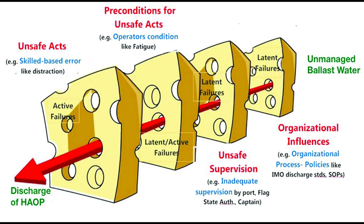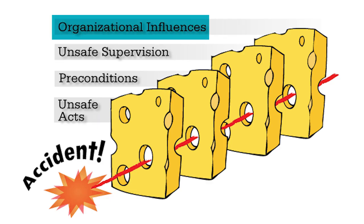Let's break the Swiss cheese layers further. Layer 1: Organizational Influences — the big cheese of the safety stack. The company's culture, policies, and management decisions. If the bosses are cutting corners to save a buck, it's like adding extra holes to this slice, a dodgy foundation that makes everything else wobbly. A solid foundation within the company makes the cheese more like delicious Gouda with no holes in it.